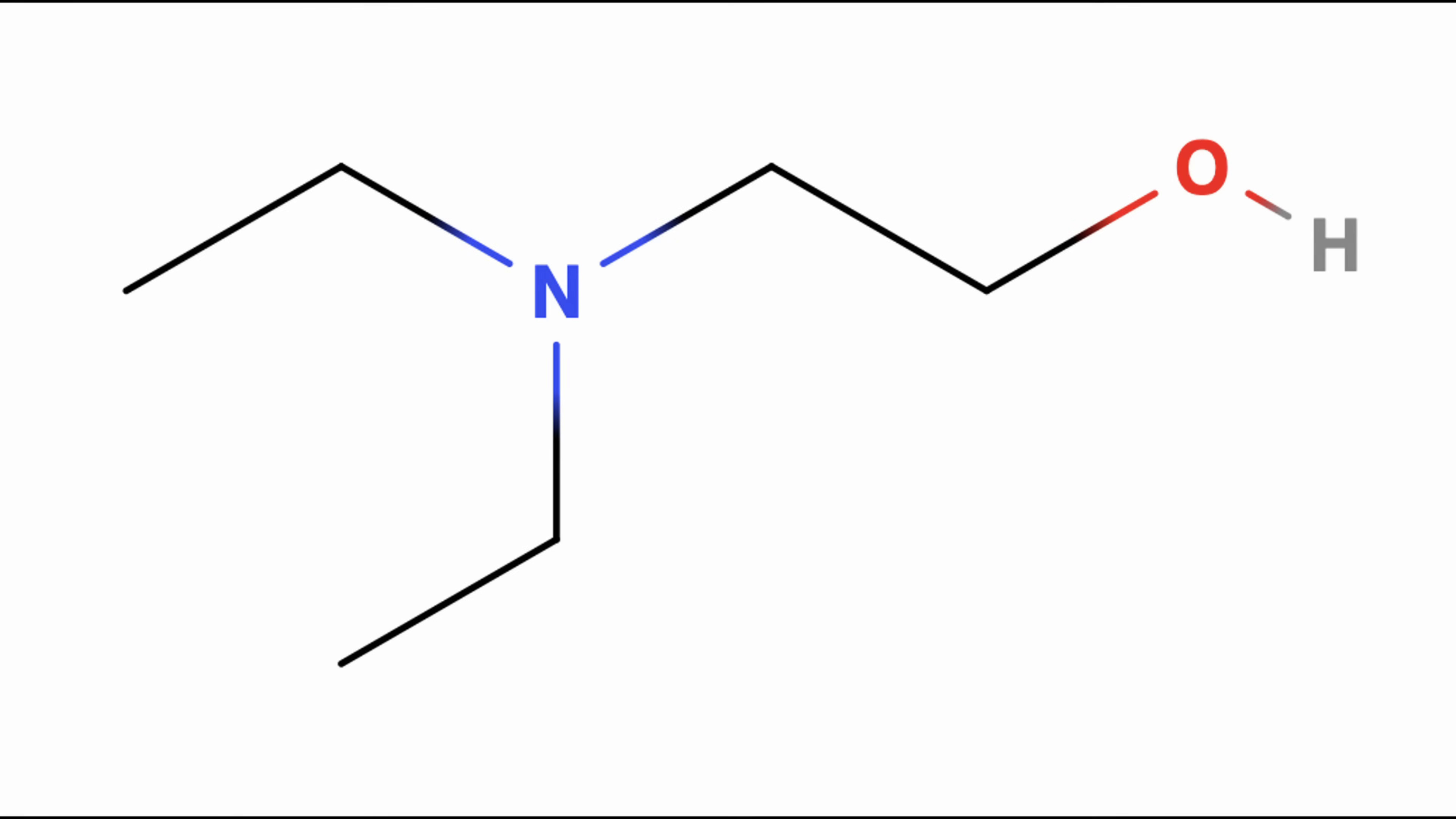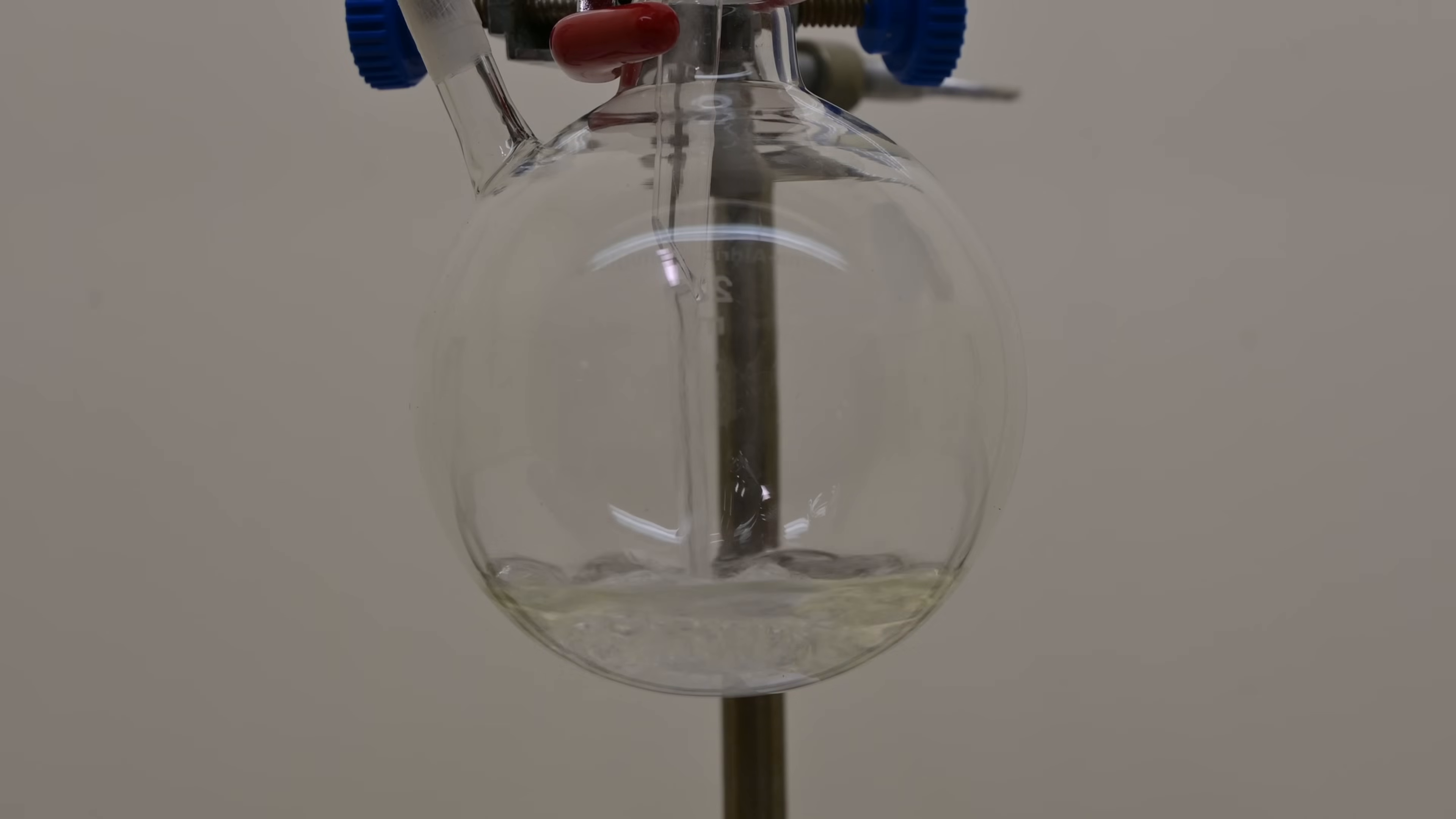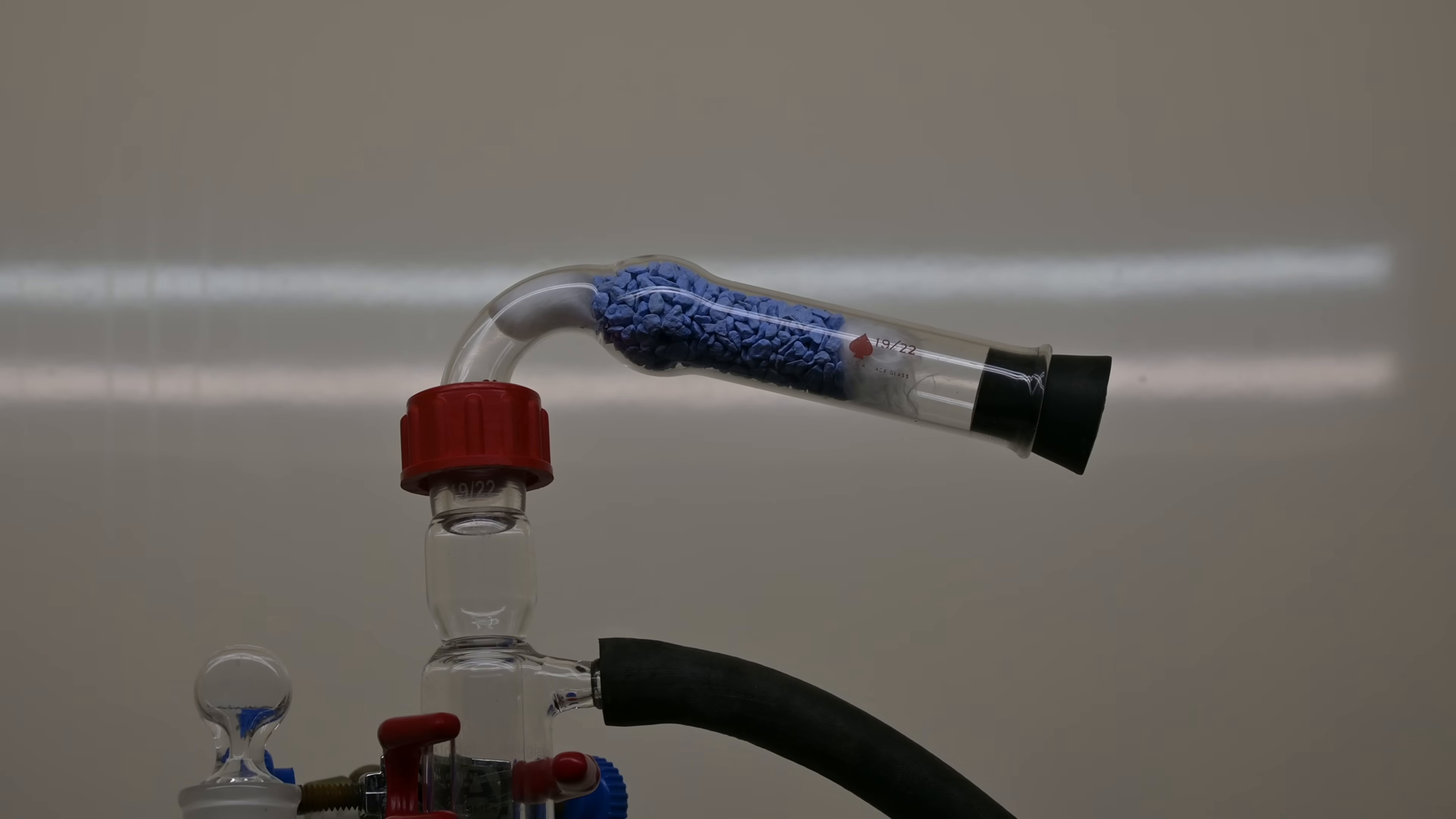First we need diethylaminoethanol to replace the ethanol in the benzocaine. To synthesize this, I begin by adding 38 grams of diethylamine into a 250 milliliter round bottom flask. I then fitted the flask with a reflux condenser and a dropping funnel. I used a claisen adapter so I can have multiple attachment points. Attached to the reflux condenser I have a drying tube to protect the reaction from atmospheric moisture.